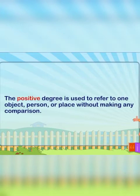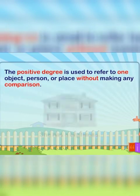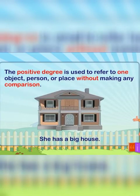The positive degree is used to refer to one object, person, or place without making any comparison. For example: she has a big house.